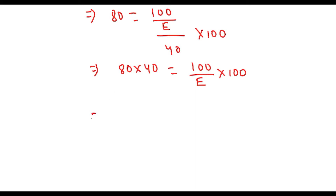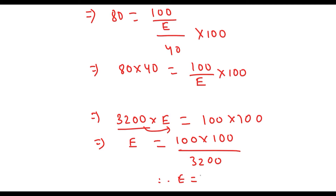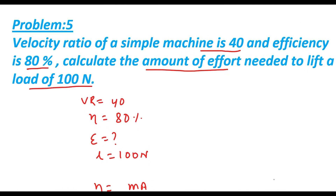Using cross multiplication: 80 into 40 equals 100 divided by effort, into 100. Rearranging, effort equals 100 into 100 divided by 3200, giving approximately 3.125 Newton. This is the required effort needed to lift a load of 100 Newton.